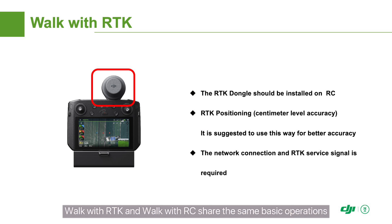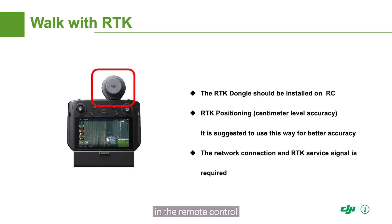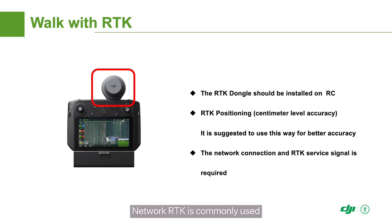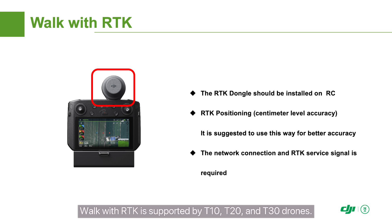Walk with RTK and Walk with RC share the same basic operations, but due to the high-precision RTK module embedded in the remote control, Walk with RTK provides centimeter-level positioning precision. Walk with RTK requires connection to RTK signals — Network RTK is commonly used, which requires a strong network. Walk with RTK is supported by the T10, T20, and T30 drones.